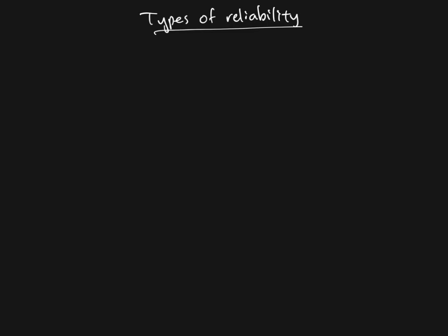In the last video we talked about two different types of reliability: test-retest reliability and the closely related parallel forms, or equivalent forms, reliability.